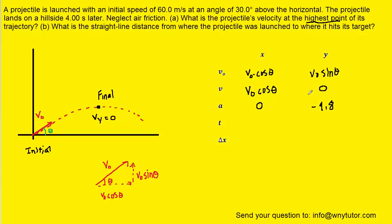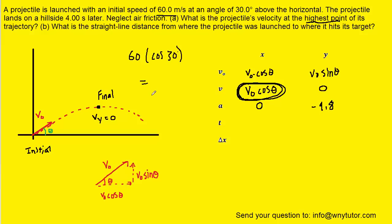We're ready to answer part A. It's asking for the velocity at the final point. In the y direction it's zero, so the only velocity is in the x direction: v₀cosθ. We simply plug in the values — v₀ was given as 60 m/s, multiplied by cos(30°). Make sure your calculator is in degree mode. We get roughly 52 meters per second. The final velocity in the y direction for part A was zero, so we only needed to consider the final velocity in the x direction.